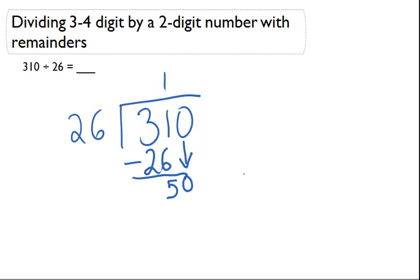26 goes into 50 only one time. It's only going to be one time. So 1. So 26 times 1, I'm going to put 26 here and subtract 50 minus 26 is 24.